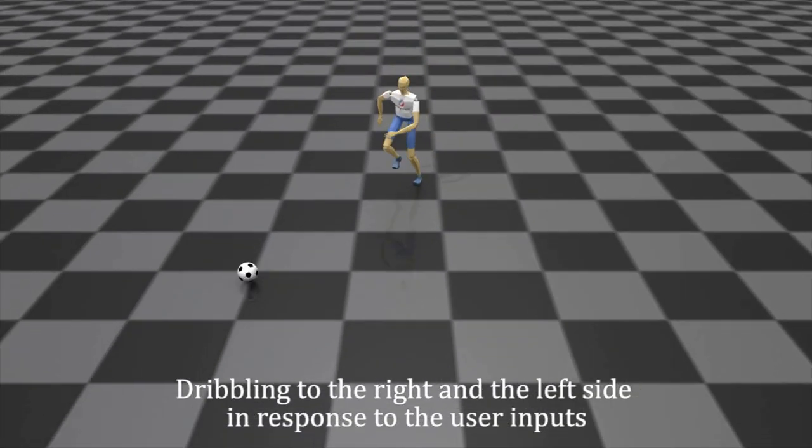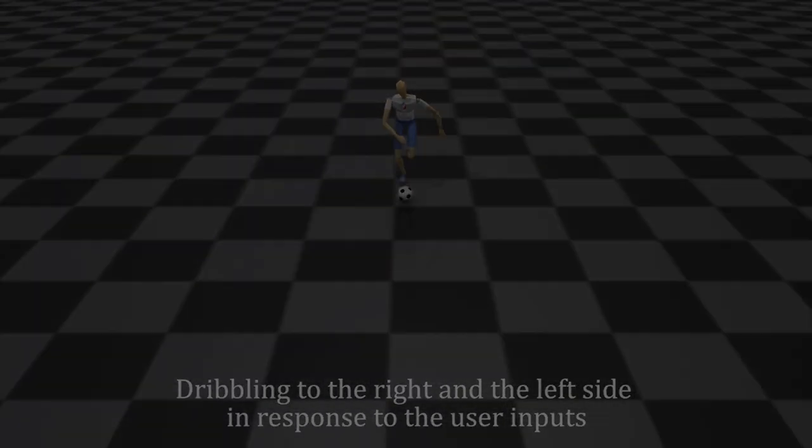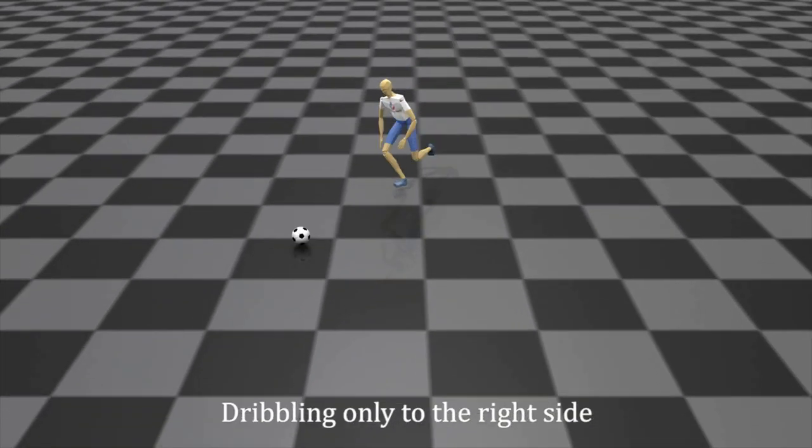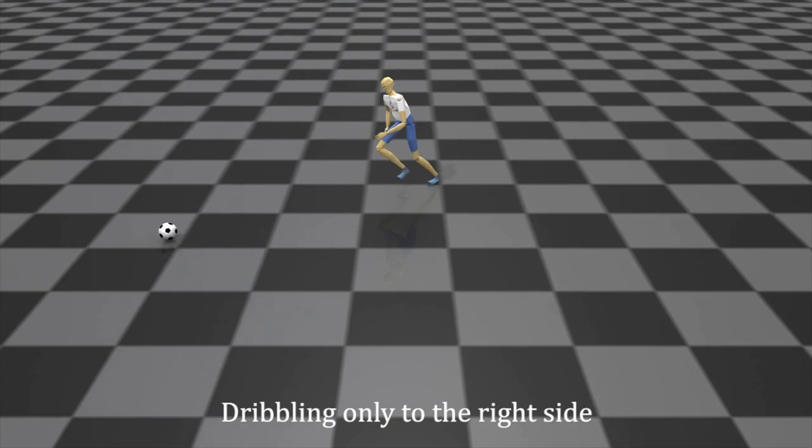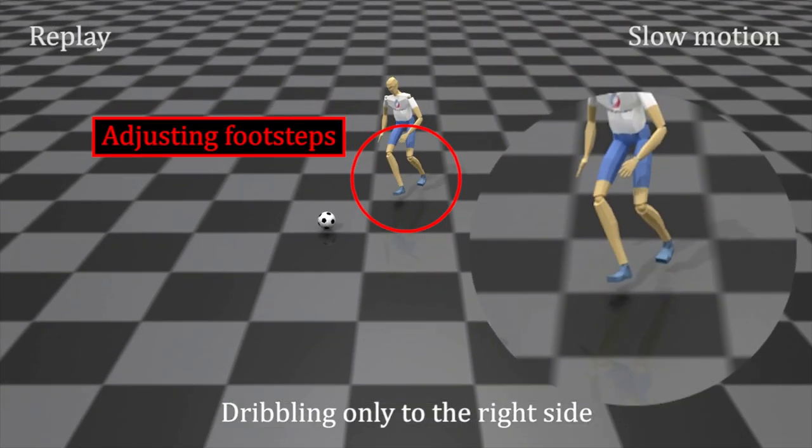Dribbling to the side. The character can change the dribbling direction in response to online user inputs. Interestingly, the character shows quick footstep changes for dribbling the ball. This rapid adjustment of footsteps is fully generated through our framework.